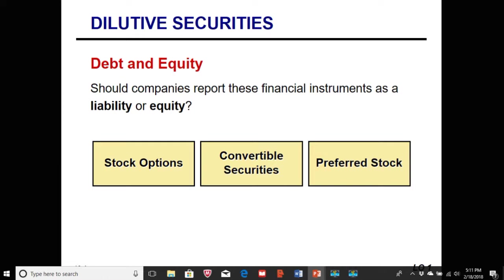Sometimes the question is whether we recognize these as liability, equity, or both, because some of these have components that may fall into both categories. Think about preferred stock — with preferred stock and a cumulative dividend, it functions very similar to debt. However, it is a stock.